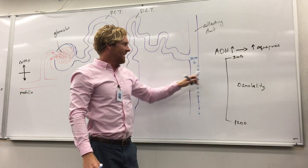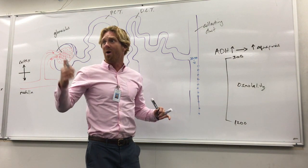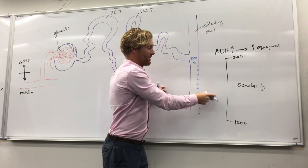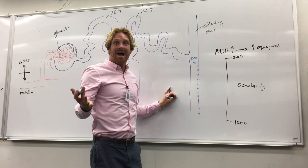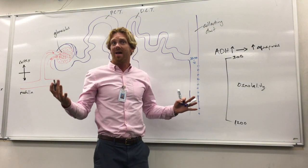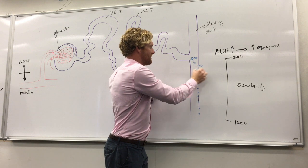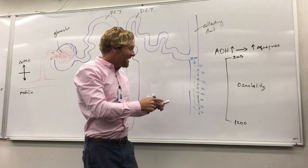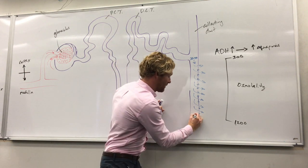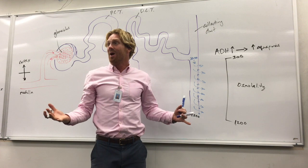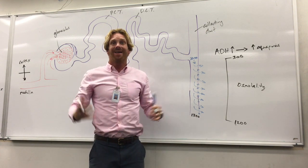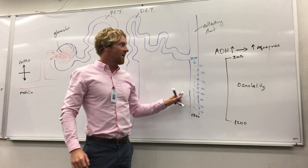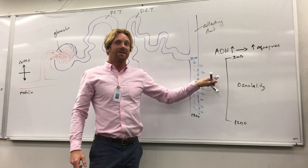The urine entering the collecting duct from the distal convoluted tubule has an osmolality of about 300. As that urine flows down the collecting duct, the environment around it gets saltier and saltier. Water wants to move toward that salty environment, and now that we have aquaporins in the walls, water flows out through them. By the time we reach the bottom, the urine is concentrated at about 1200 — we've recaptured the water we needed because we were dehydrated.